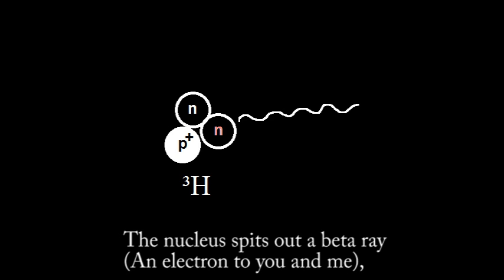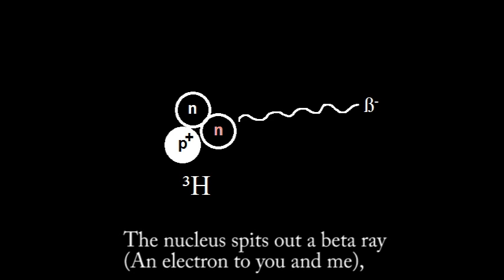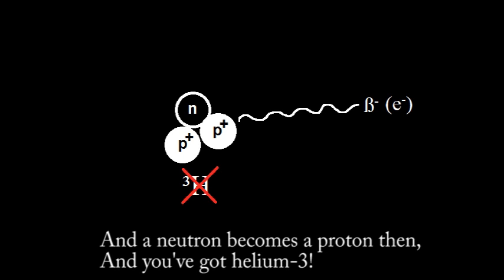nuclear decay. The nucleus spits out a beta ray, an electron to you and me. And a neutron becomes a proton then, and you've got helium-3.